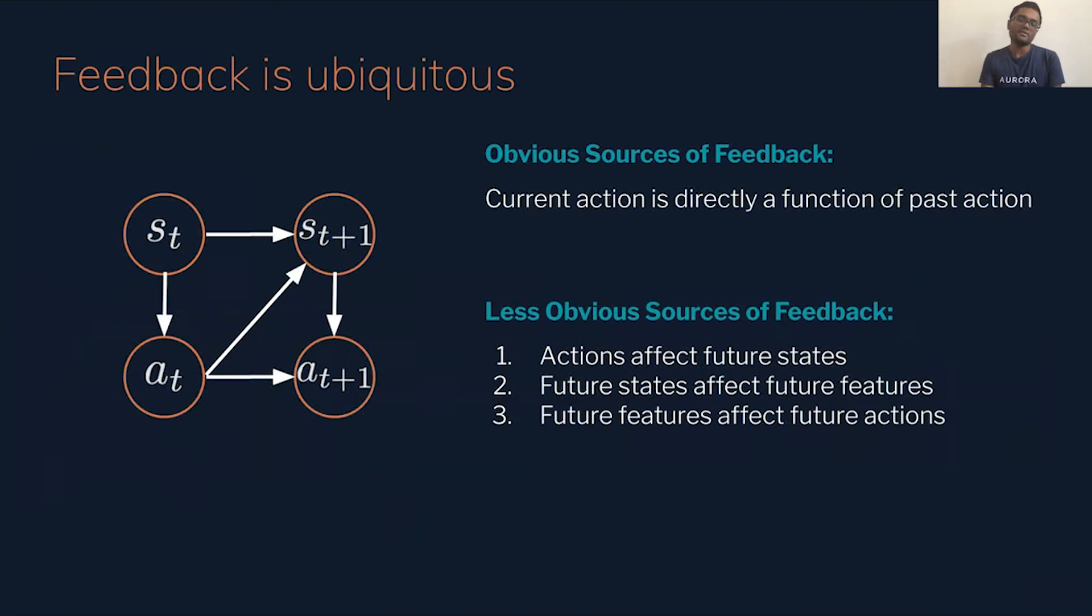But there are also less obvious sources of feedback - fundamentally in our problems, our actions affect the future. If I decide to take this action, it's going to change how the future will evolve. And as I affect the future state of the system, that affects future features that I'm going to feed to the learner. And those future features then affect the future actions. And this happens ad nauseum. There's a cyclic loop here where our actions affect states, our states affect features and our features affect actions and so on. And this cycle is feedback. It is just the feedback of our own decisions have consequences.